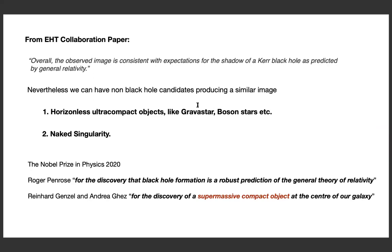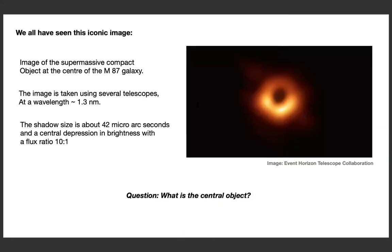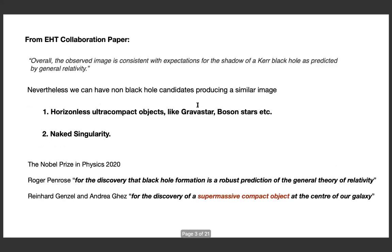There is also the possibility of more exotic objects like a naked singularity at the center, if you violate the cosmic censorship principle of general relativity. By only looking at this image, it is very difficult to differentiate what the central object is. Even gravastar and boson star models can be constructed which will give similar image parameters to a black hole.